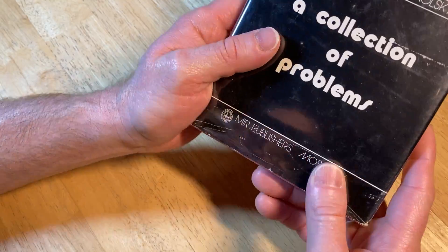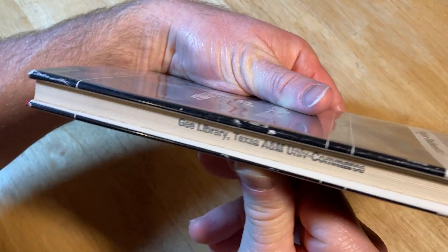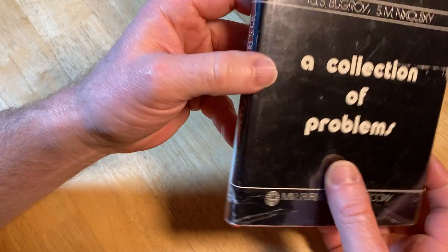This one is in English and has a dust jacket and everything, so it's really quite nice. This one came from Gee Library, Texas A&M University Commerce. So it came from a library.